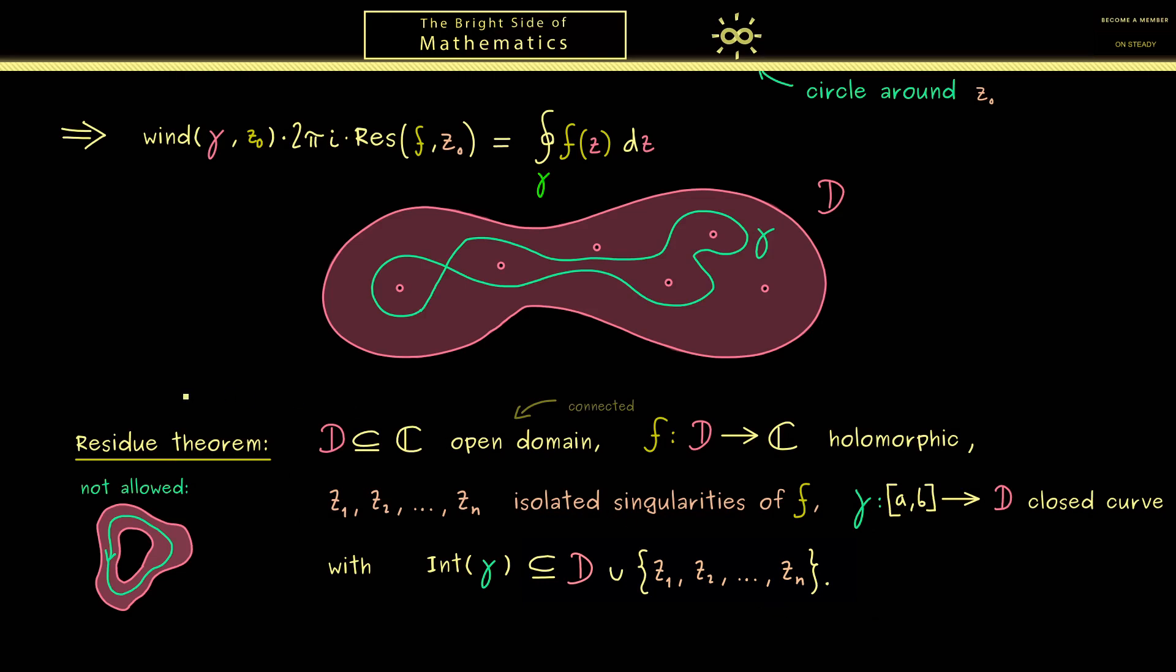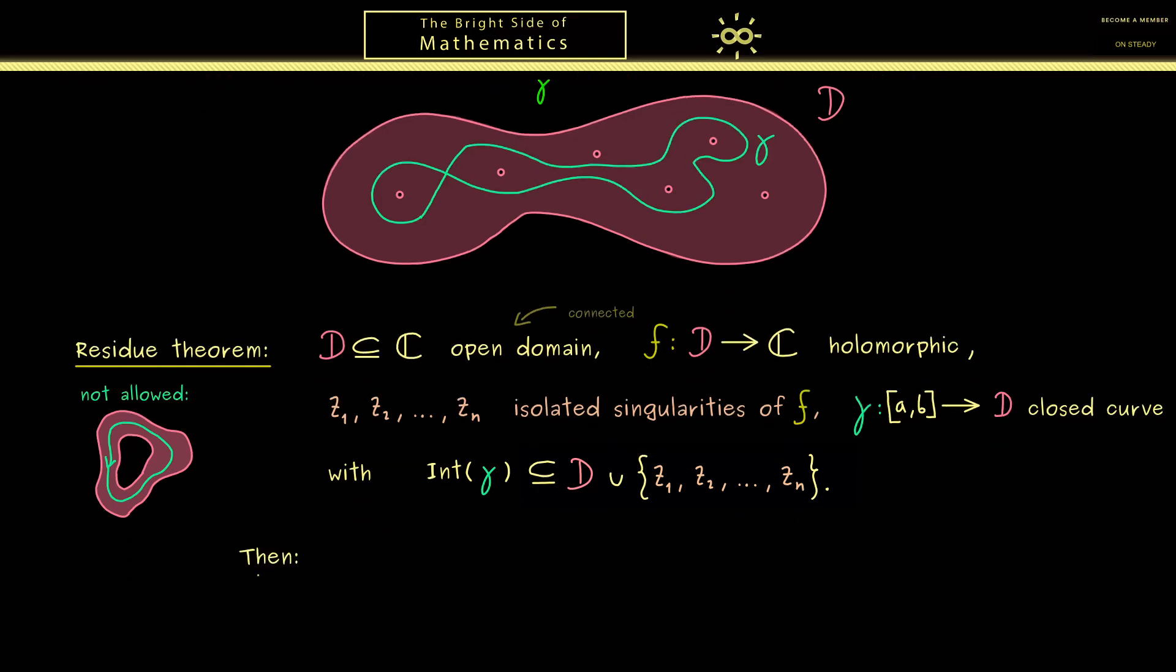Okay and now the statement of the residue theorem is simply the generalization of this statement from above. So this means we just have to sum over all isolated singularities. So more precisely this closed contour integral here is given by the sum where j goes from 1 to n. And then we have the factor 2pi times the winding number around zj times the residue at zj. So in other words we simply sum up all the residues weighted with the winding numbers. So you see the residue theorem tells us that if we know the residues of the function we can calculate a closed contour integral. So it's a very powerful result and the generalization of Cauchy's theorem.